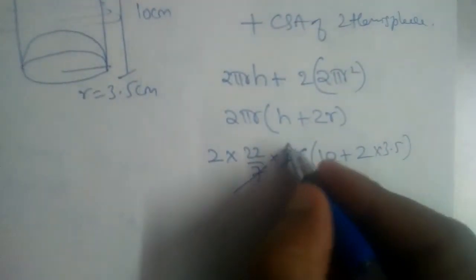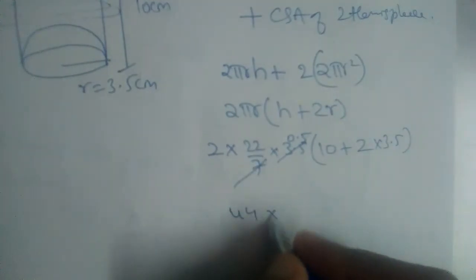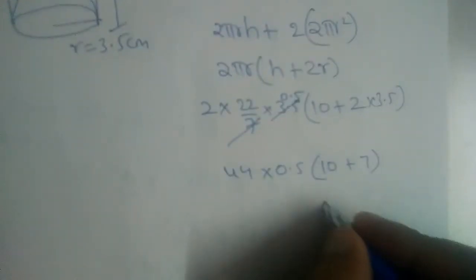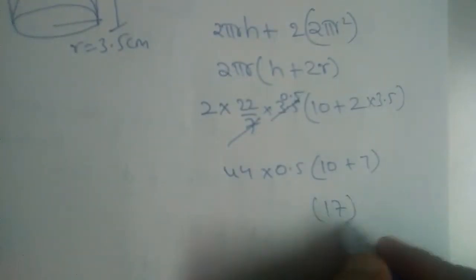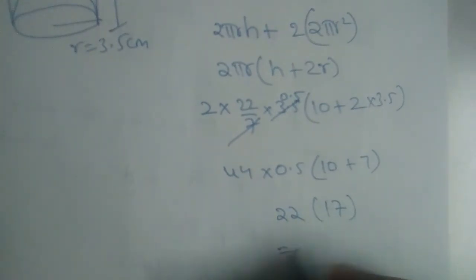So 7 and 3.5 will go 0.5 times. So it is 44, 2 × 22 is 44, 0.5, 10 plus this is 7, it is 17. 44 × 0.5 is 22, and this will give us 374. It is in centimeters, so centimeters square.